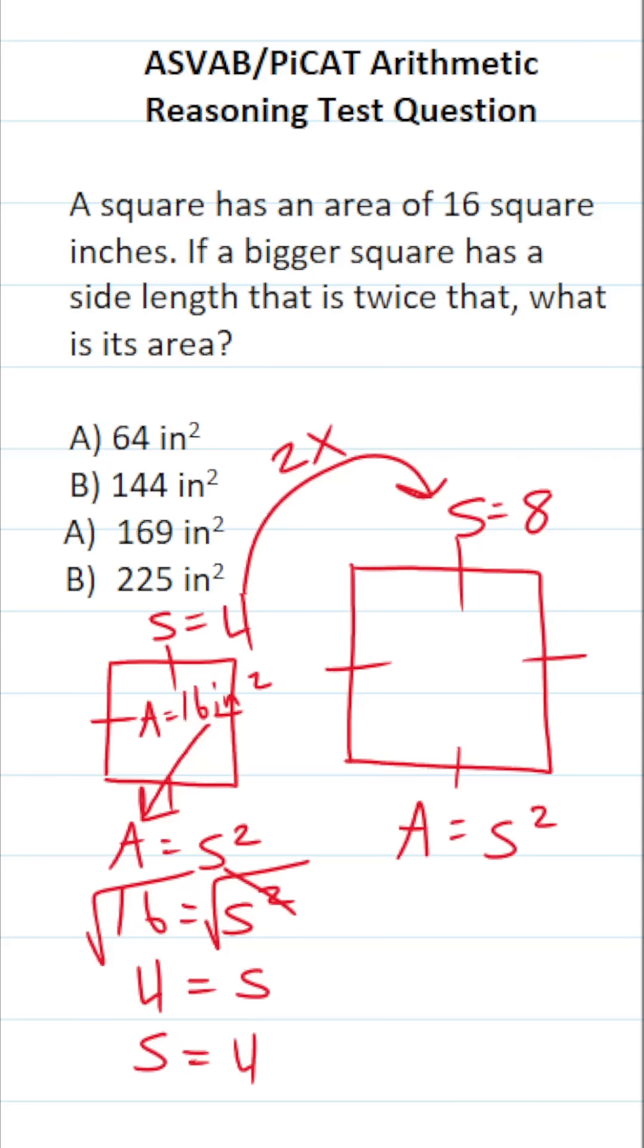Now that we know the side length of the bigger square, we can simply plug it into the area formula. This becomes area equals 8 squared. 8 squared is the same thing as 8 times 8 or 64. So the area of the bigger square is 64 square inches.